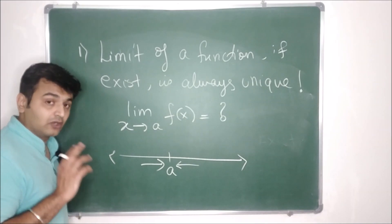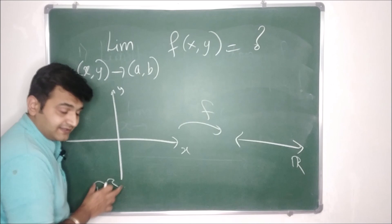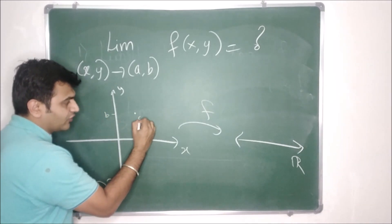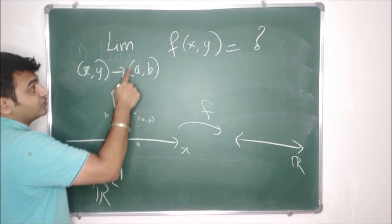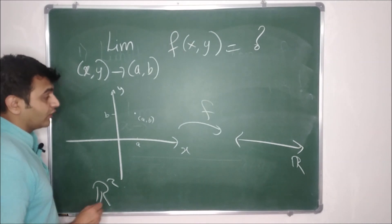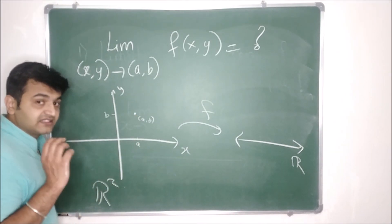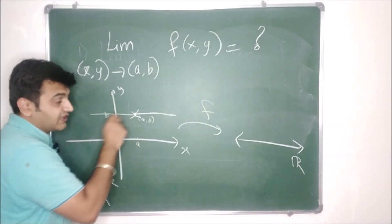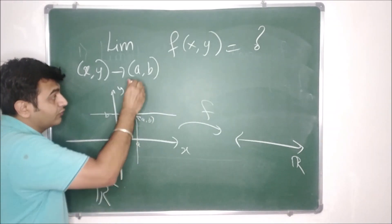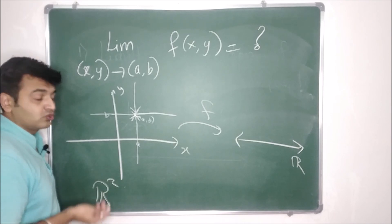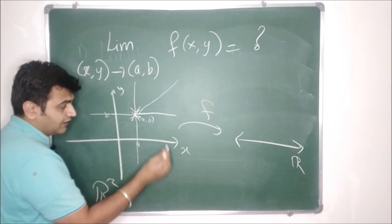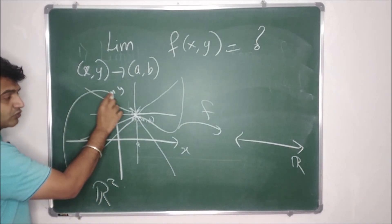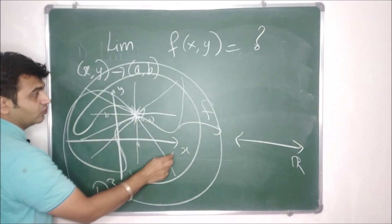When you're in higher dimensional space, things change drastically. Suppose you have a function from R² to R, and there is some point (a, b). If I want to approach (a, b), I can approach through a horizontal line from the left, from the right, from below, from above, through diagonal lines, through curves — in short, I can approach (a, b) through infinitely many paths.